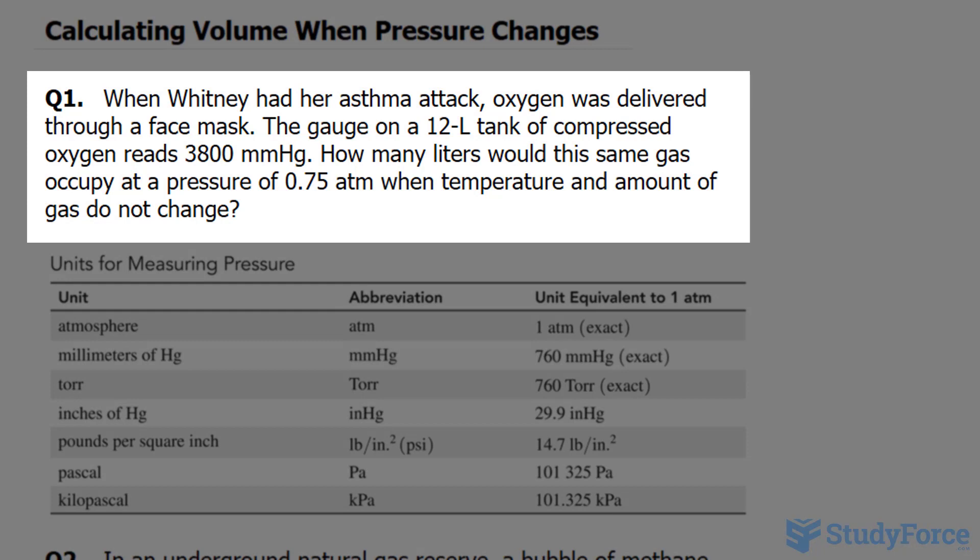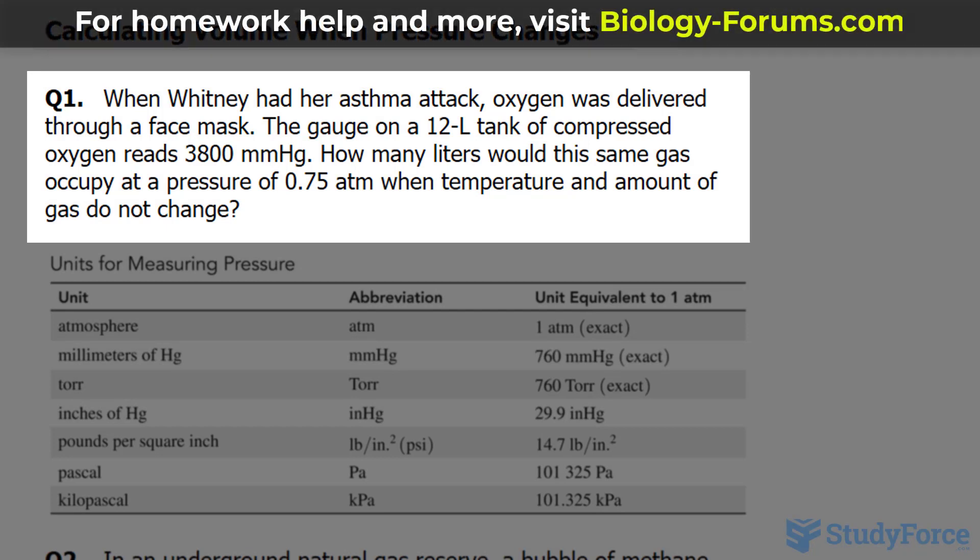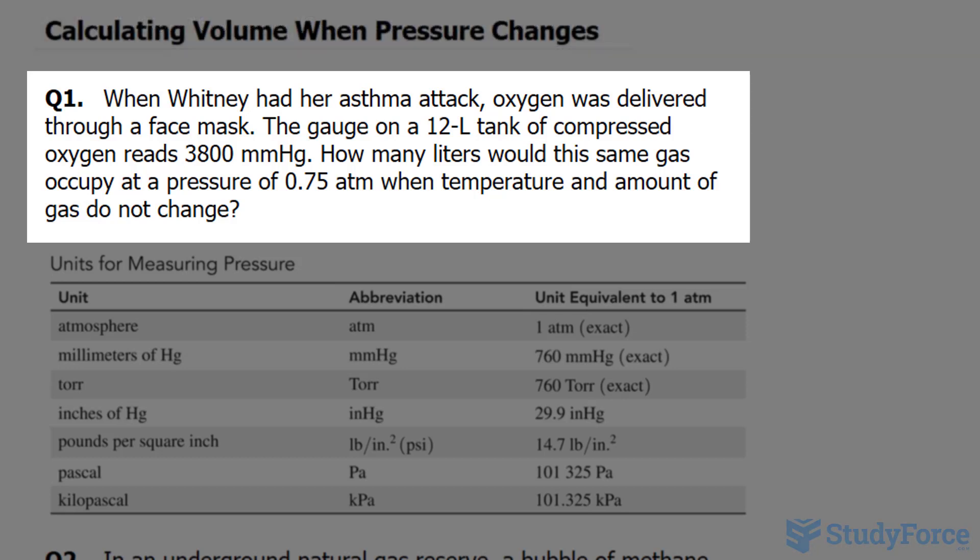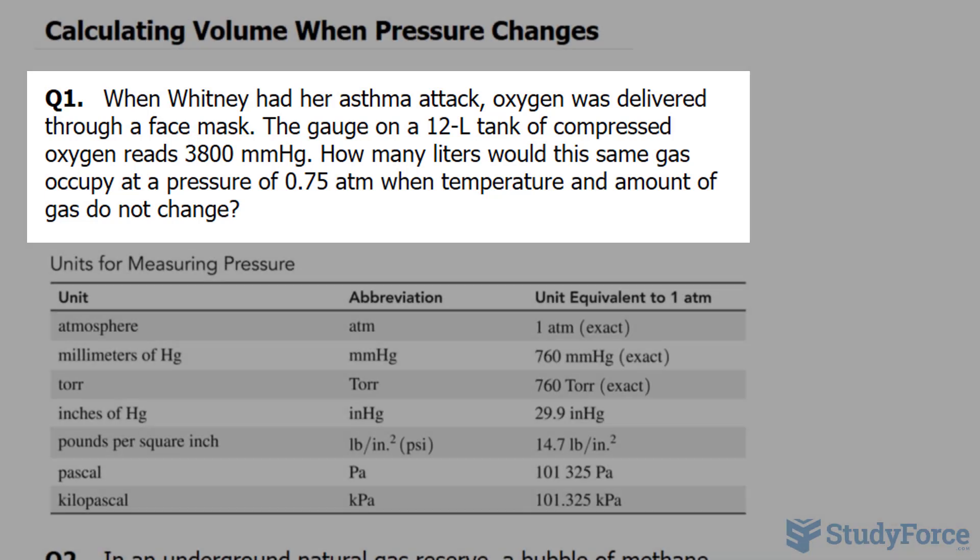Question 1 reads: When Whitney had her asthma attack, oxygen was delivered through a face mask. The gauge on a 12-liter tank of compressed oxygen reads 3,800 millimeters of mercury, mmHg. How many liters would this same gas occupy at a pressure of 0.75 atm when temperature and the amount of gas do not change?